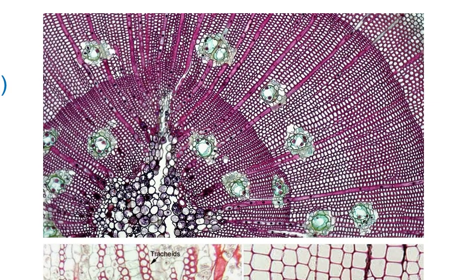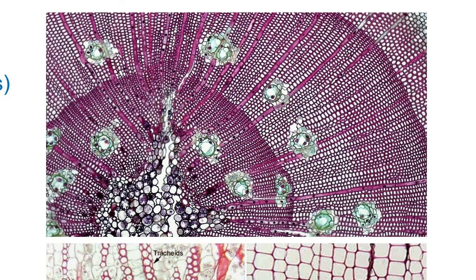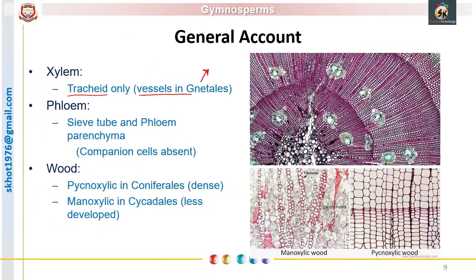Later on, secondary xylem covers the primary xylem. The secondary xylem shows tracheids. Tracheids produced during the monsoon (rainy) season are larger and have less thickening compared to tracheids produced in the summer or drier season. That is why each year we get a separate ring of tracheary elements — such rings in the vascular system are called annual rings. The cavities visible are resin canals; do not confuse them with vessels, as vessels are absent. The phloem shows sieve tubes and phloem parenchyma.